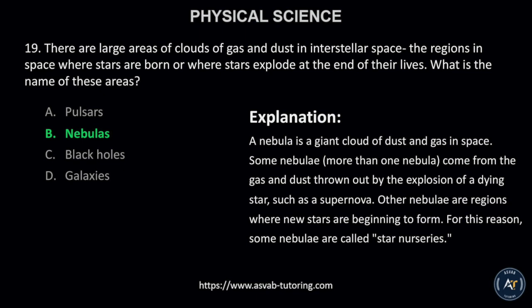A nebula is a giant cloud of dust and gas in space. Some nebulae — more than one nebula — come from the gas and dust thrown out by the explosion of a dying star, such as a supernova. Other nebulae are regions where new stars are beginning to form. For this reason, some nebulae are called star nurseries.